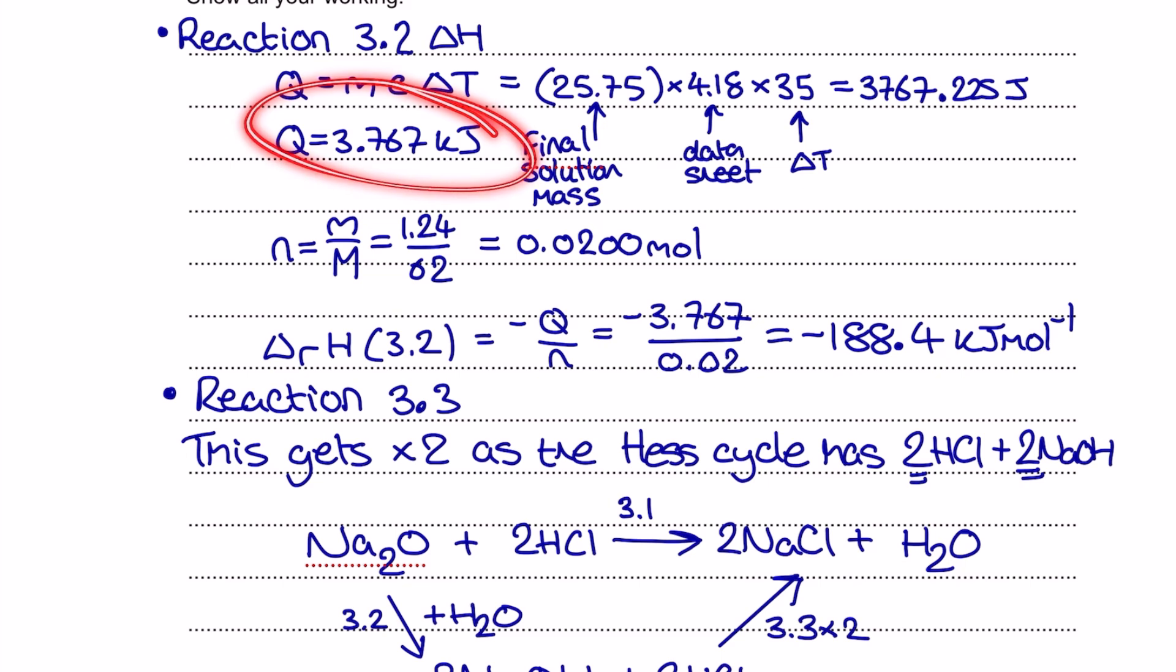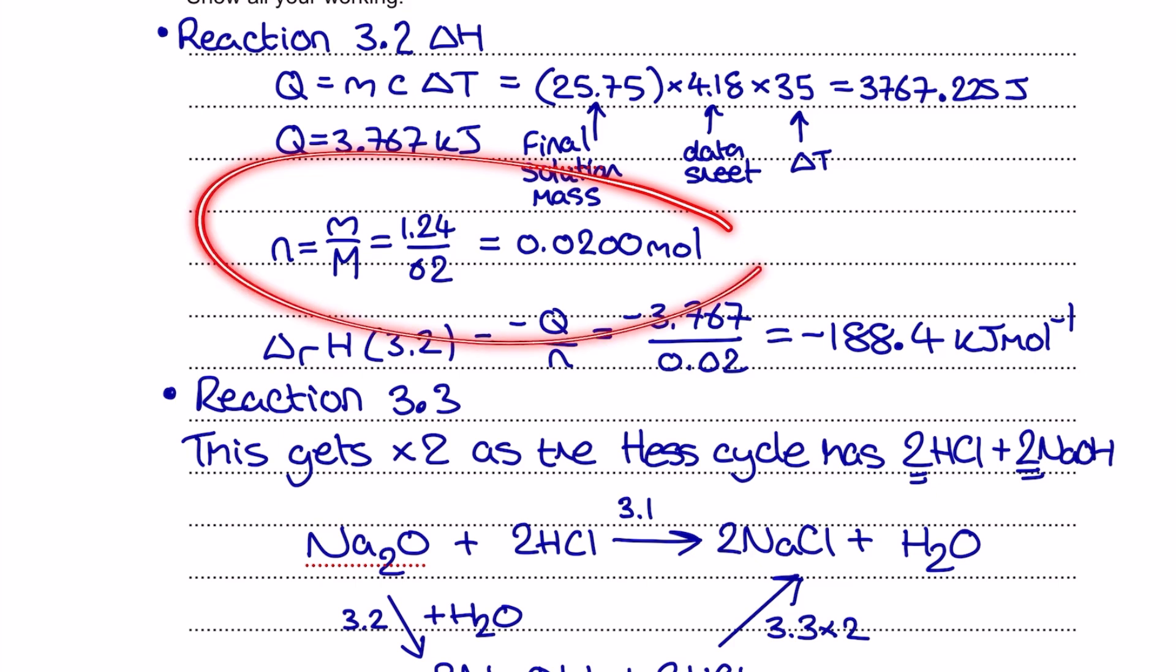That gives me a q value in kilojoules as you can see here 3.767 and then what I do at that stage is go back to my data and find the moles that I'm using here of the sodium oxide and so that's going to be the 1.24 divided by 62 to give me 0.02 mol. Finally here to find out the molar enthalpy change for reaction 3.2 I need to do minus q divided by n and so that gives me negative 3.767 divided by the 0.02 so my enthalpy change for 3.2 is minus 188.4 kilojoules per mole.